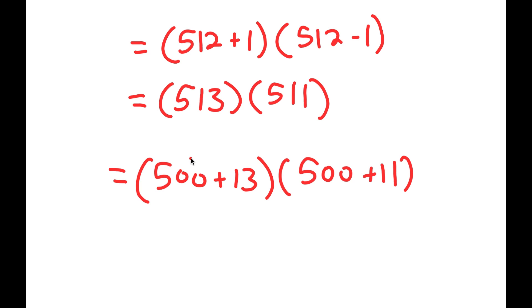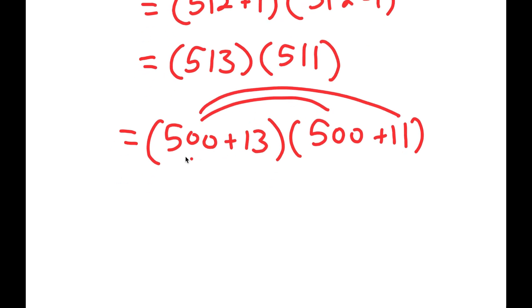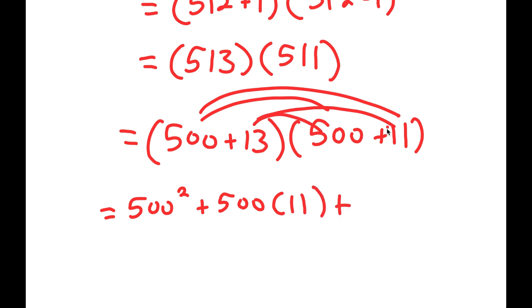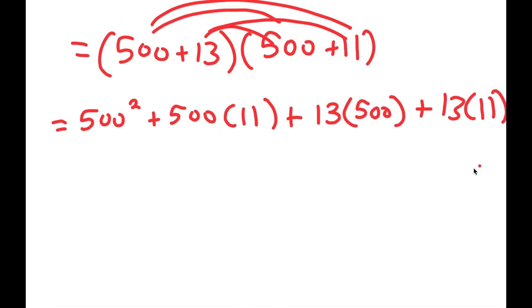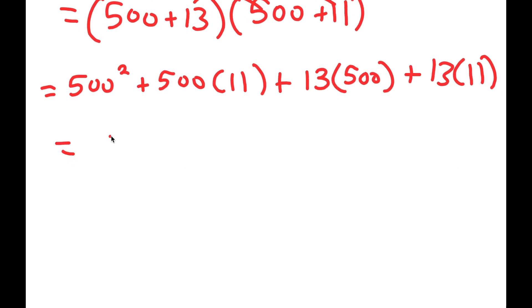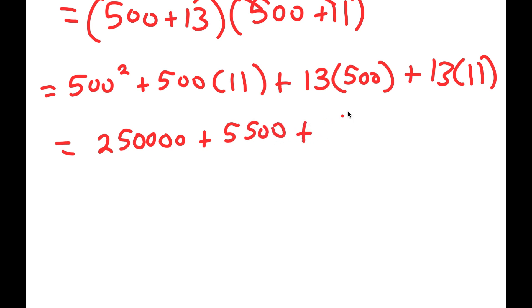This way I can distribute the 500. So I get 500 times 500, which is 500 squared, plus 500 times 11. Plus, distributing the 13: 13 times 500, plus 13 times 11. Now it's much easier to solve this. 500 squared is 250,000. 500 times 11 is 5,500. 13 times 500 is 6,500. And finally, 13 times 11 is 143.